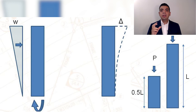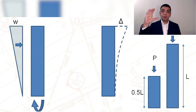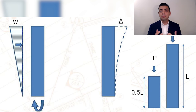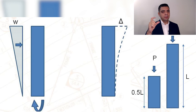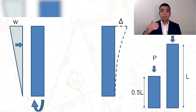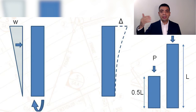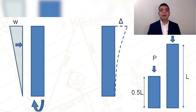Gravity load is somewhat linear to the height of the building — if you double the height, you roughly double the weight on the columns and foundation. Lateral loads, however, are very sensitive to height because they relate to the height of the building squared, and sometimes cubed. When you apply a lateral load, the overturning moment at the base of the building increases significantly and quickly as the building gets taller.